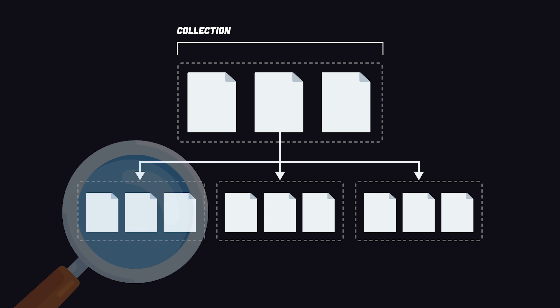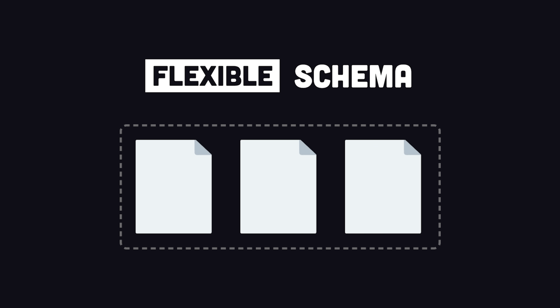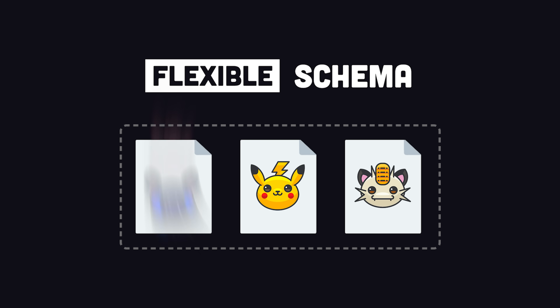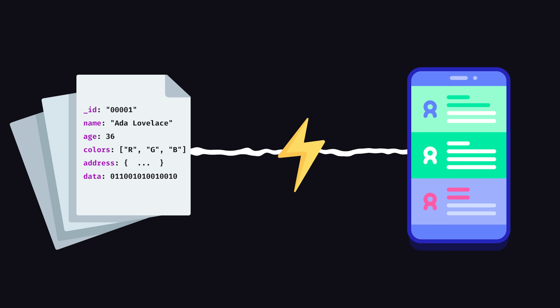Unlike a relational table, a predefined schema for a collection is optional, which allows you to evolve your data structures rapidly without running complex database migrations. More importantly, it allows data that's frequently accessed together by an app to be stored in the same place. This makes read operations extremely fast because no joins are required.